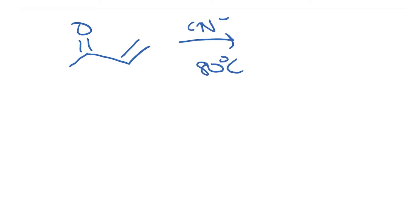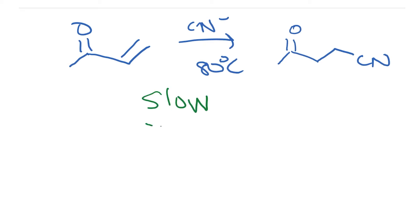The importance of reversibility comes now, because at 80 degrees centigrade the product that is formed is actually the conjugate addition product. Based on the observation that at 5 to 10 degrees centigrade you do not observe this product, this must be a slow reaction. You need a higher temperature, which likely means you need a larger fraction of molecules with enough energy to get over the barrier to form this product.